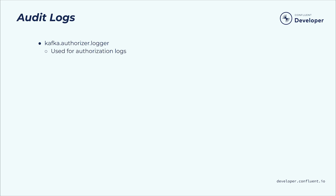Apache Kafka doesn't provide anything called an audit log directly out of the box. It does, however, support comprehensive application logging using log4j. Log4j can be configured with multiple appenders that deliver log events from different logger instances to different destinations, typically files. There are two logger instances: kafka.authorizer.logger, which is used for authorization logging, and kafka.request.logger. By configuring separate appenders for these two logger instances in the log4j properties file on each broker, you can capture detailed authorization and request information for auditing, monitoring, and debugging purposes.